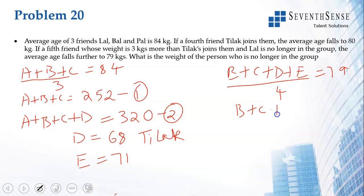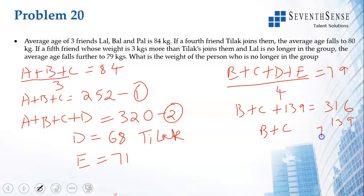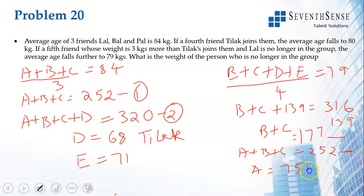With Lal gone, (b + c + d + e) has an average of 79, giving a total of 316. We know d plus e is 68 plus 71 equals 139. So b plus c equals 316 minus 139 equals 177. Since a plus b plus c was 252, subtracting 177 gives Lal's age (a) as 252 minus 177 equals 75.